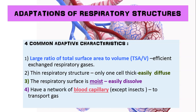There are four common adaptive characteristics in respiratory structures. First, they have a large ratio of total surface area to volume for efficient exchange of respiratory gases. Second, they have a thin respiratory structure — only one cell thick — for easy diffusion of gases. Third, the respiratory surface is moist to enable gases to dissolve easily. Last, they have a network of blood capillaries, except in insects, to transport gases.